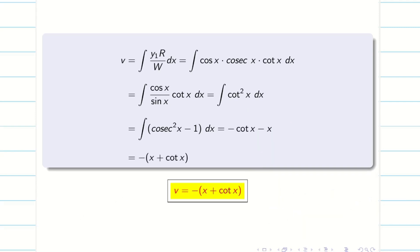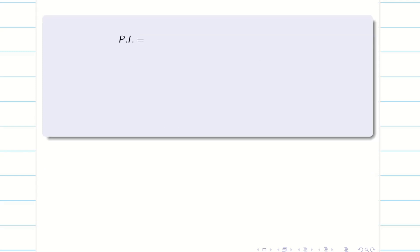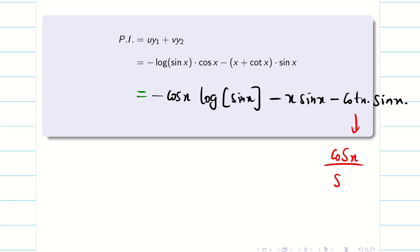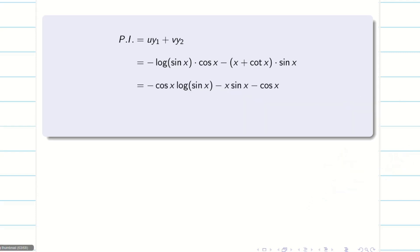I want to find u·y₁ + v·y₂. PI = u·y₁ + v·y₂. We know our u and v as well as y₁ and y₂. Substitute here. Simplifying this, I will bring cos x to the front: -cos x log sin x. When you expand this, minus x sin x minus cot x sin x. Now cot x sin x can be simplified because cot x is cos x divided by sin x into sin x. Sin sin get cancelled. We will be having only minus cos x. Taking minus cos x common: 1 + log sin x minus x sin x.